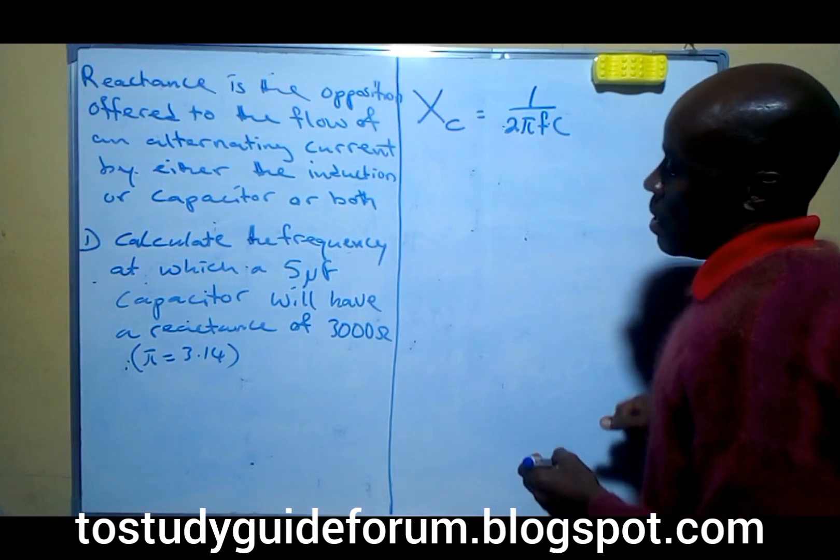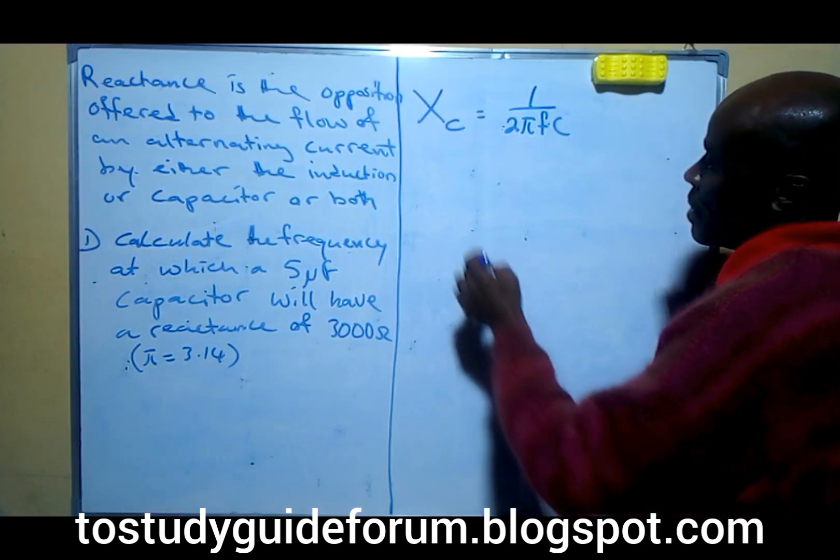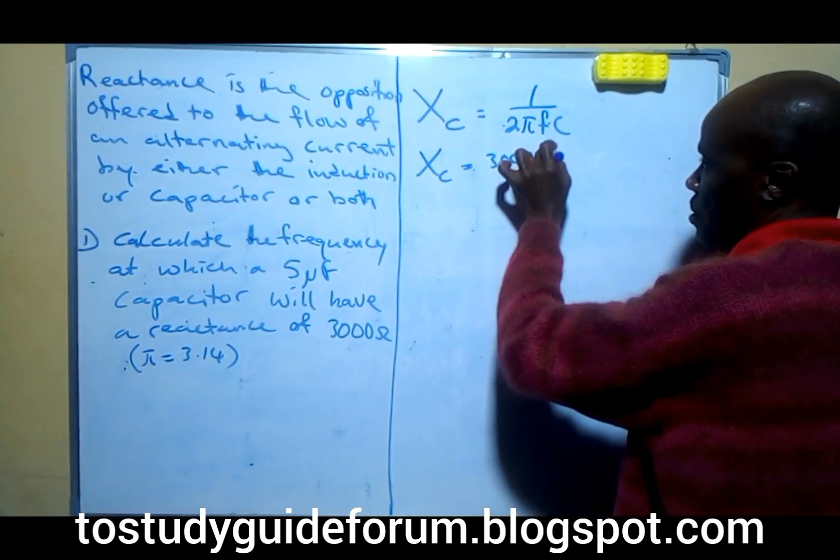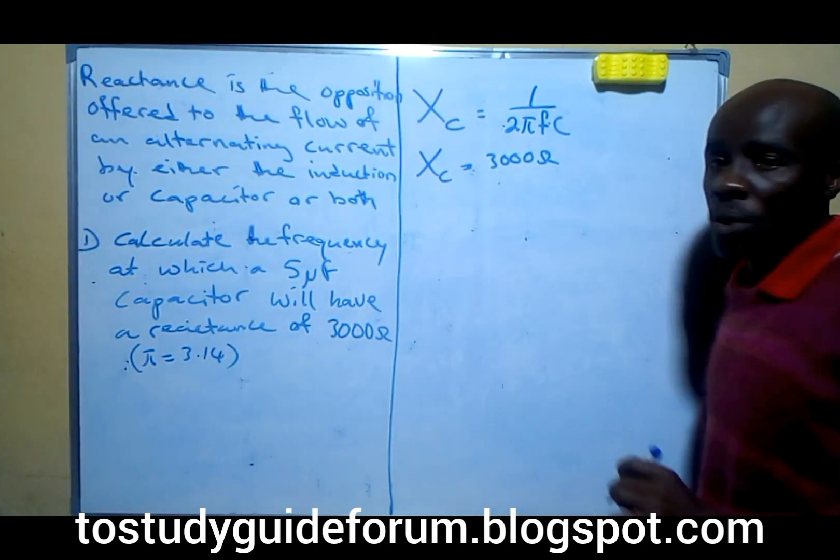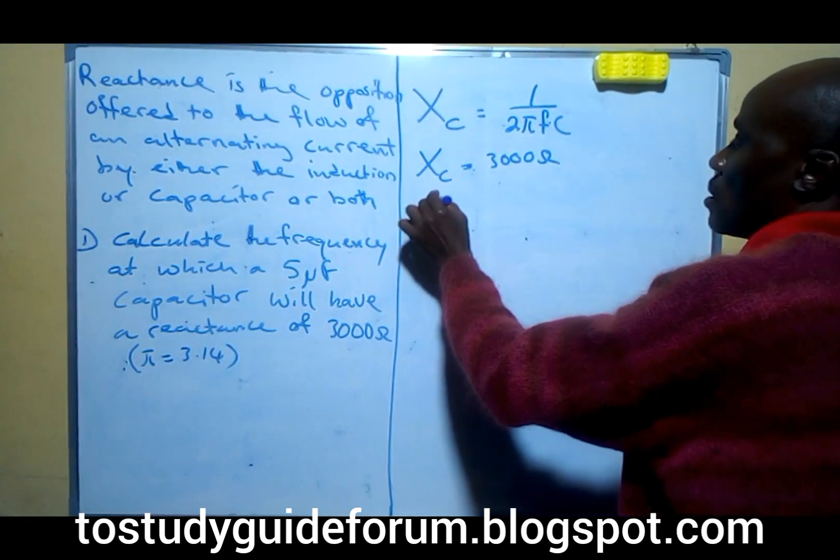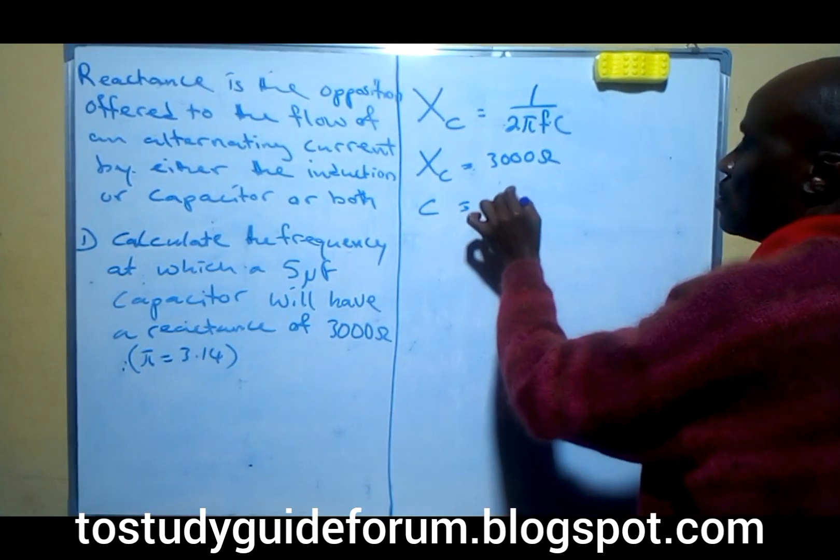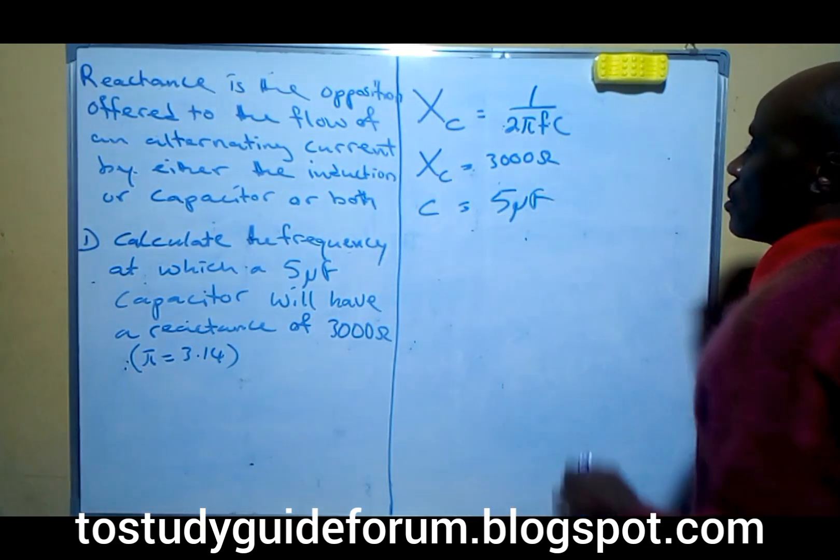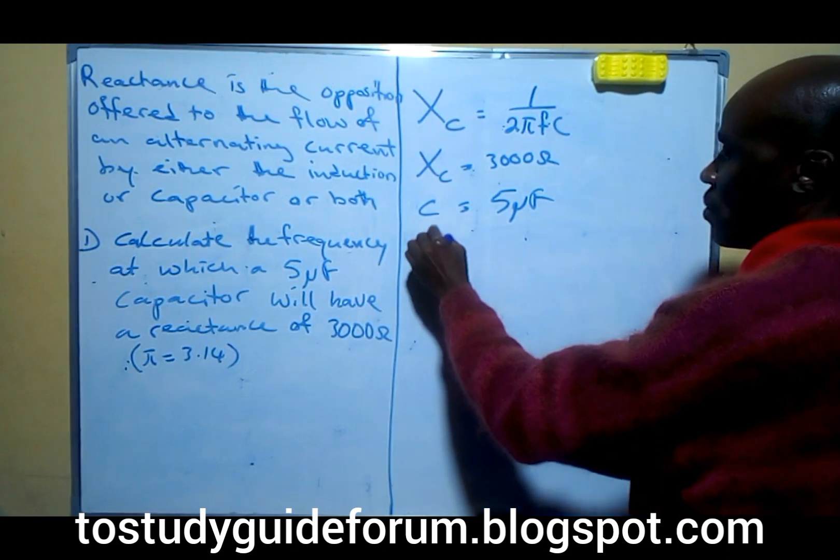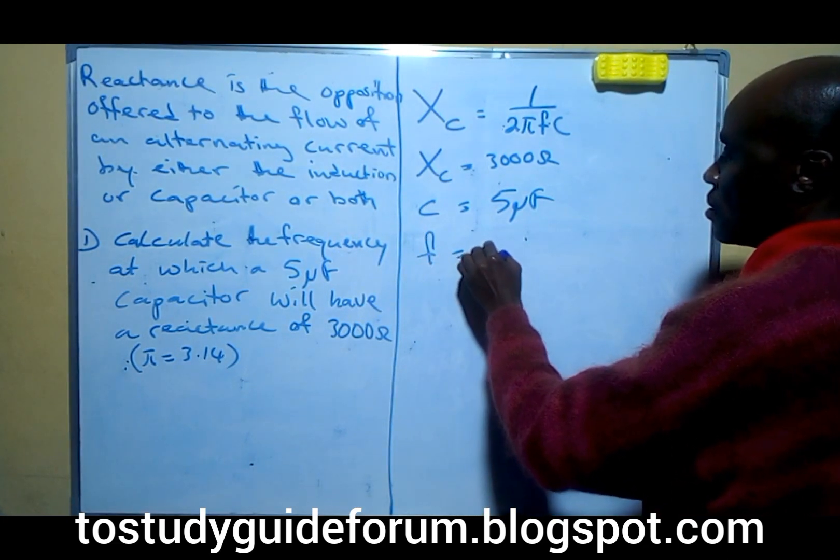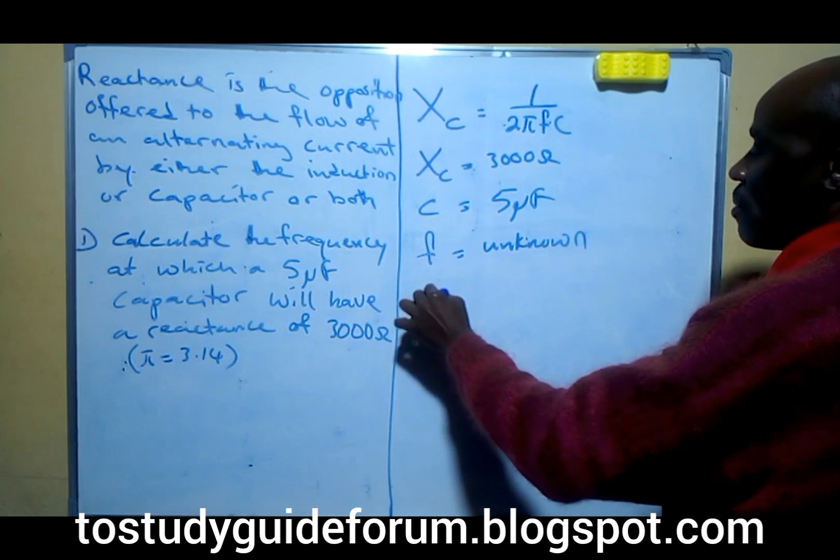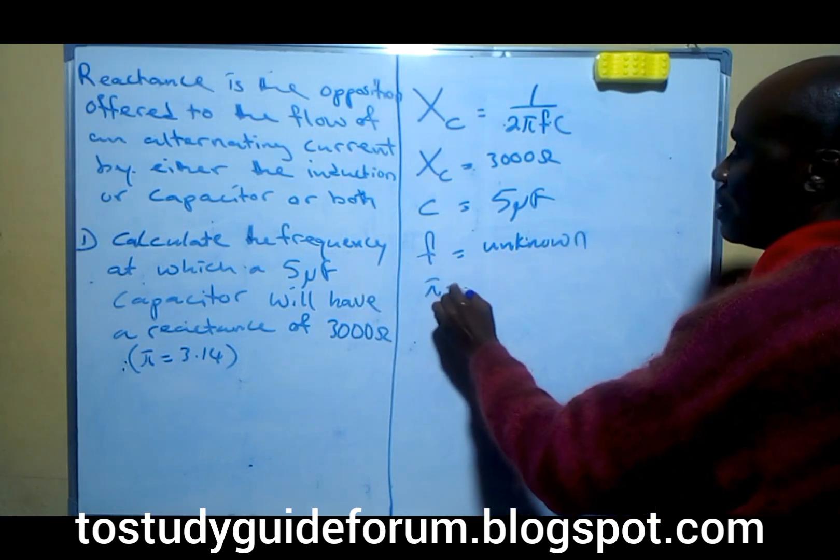Our reactance is equal to 3000 ohms, the capacitor is 5 picofarads, and the frequency is unknown. We have our pi value already given there.